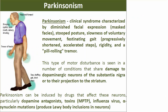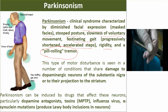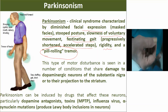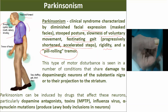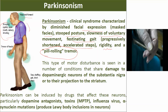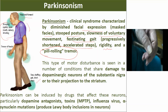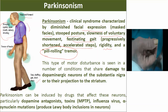Parkinsonism is a clinical syndrome characterized by diminished facial expression (masked facies), a stooped posture, slowness of voluntary movement, a festinating gait with progressively shortened accelerated steps (short shuffling steps), rigidity, and a pill-rolling tremor. Additional features include head held forward, drooping of eyelids, open mouth, salivary drooling, and tremor of the hands.